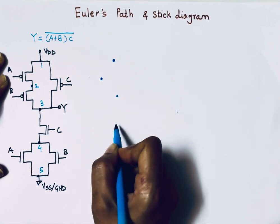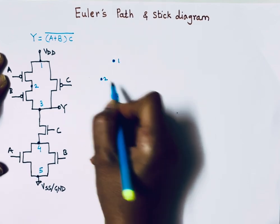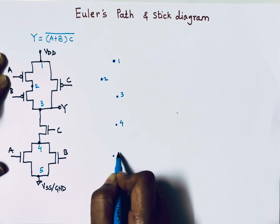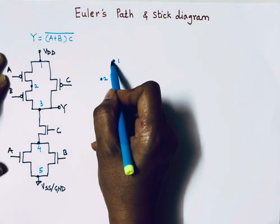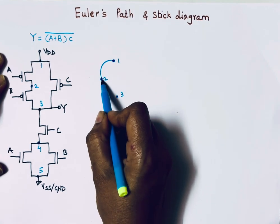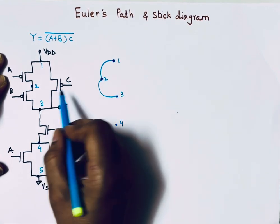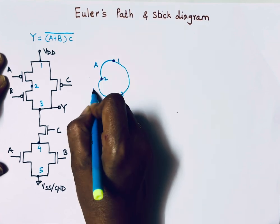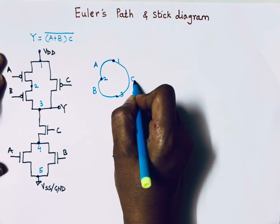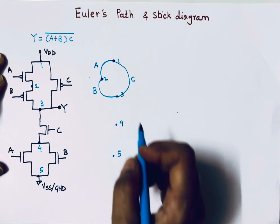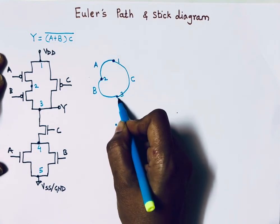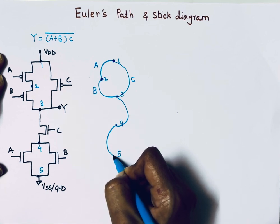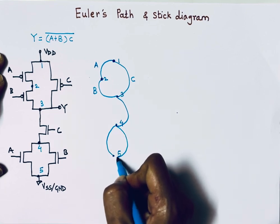Writing nodes one, two, three below, with node four below three and node five below four. In the pull-up network: one MOSFET (A) is between nodes one and two, another (B) is between nodes two and three, and C is between nodes one and three. In the pull-down network: C is between nodes three and four, and A and B are both between nodes four and five.